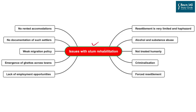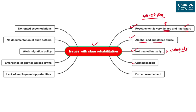The content for this discussion will cover the issues with resettlement of slums or illegal settlements and solutions for ease of resettlement of urban poor. The first issue is that resettlement is very limited and haphazard — not many cities carry out resettlement of urban poor, and even where rehabilitation takes place, it is done in a haphazard manner. People are mostly rehabilitated 40 to 50 kilometers away from urban areas and economic activities. Rehabilitation areas also often face issues of alcohol and substance abuse, and residents are not treated in a humane manner.